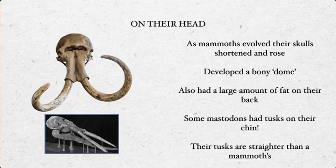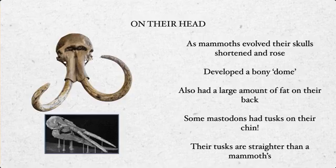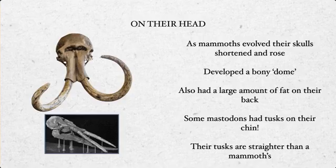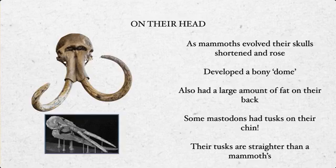As mammoths continued to evolve, their skulls shortened and rose, developing a bony dome — some paleontologists call it a dome piece. They also had a large amount of fat on their back, theorized, much like how camels carry nutrients, to stave them over if they couldn't eat for a while. Some mastodons had tusks on their chin, though typically their tusks are straighter than mammoths', which usually have a very strong C-curve to them.